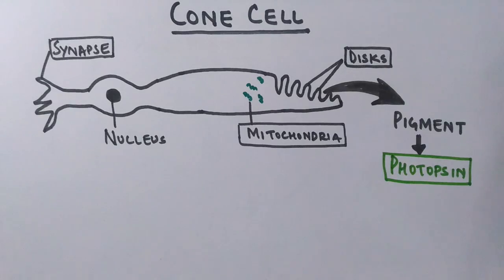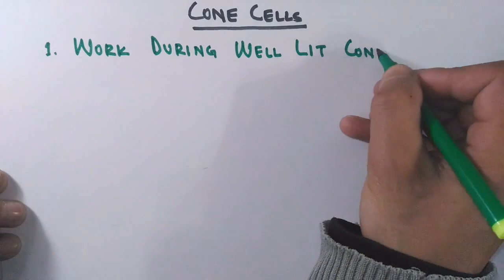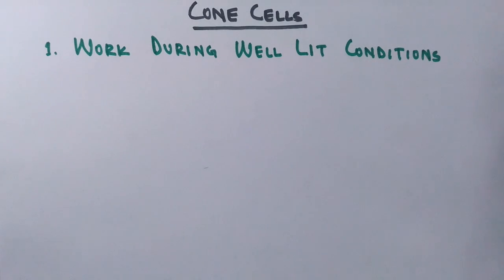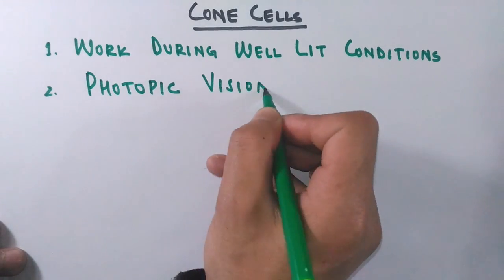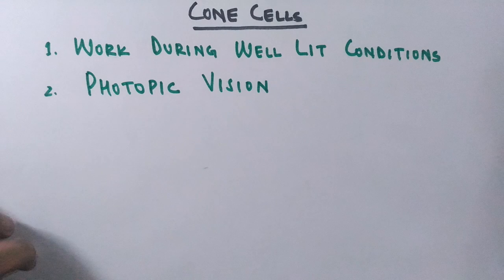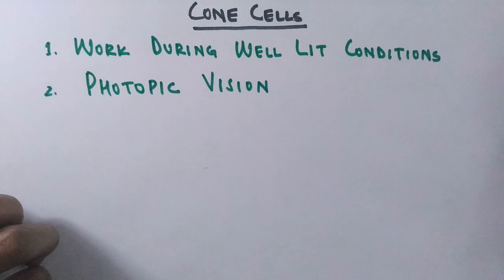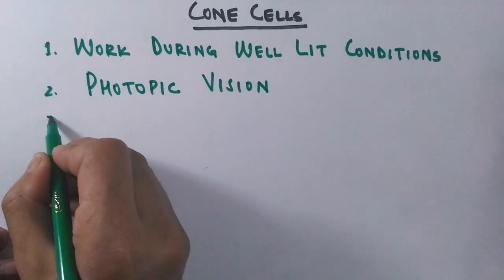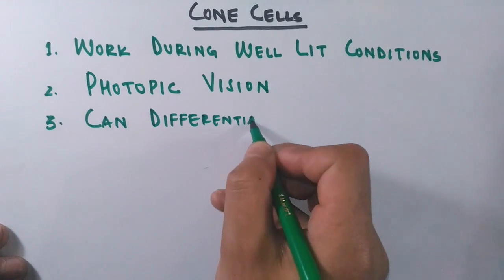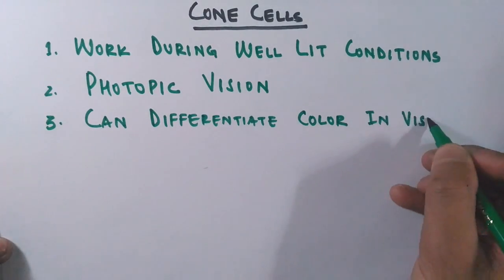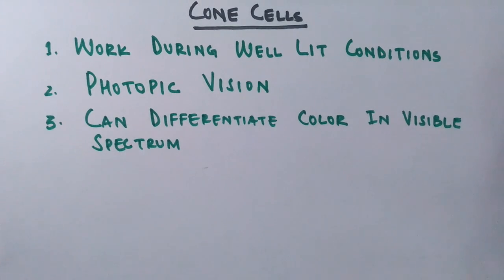Now let's see the function of cones. Unlike rods which work in dim light conditions, these work during well-lit conditions, like in daytime or in bright artificial lights like LED lights. Being able to work in well-lit conditions, we call it photopic vision. Rod cells give us scotopic vision, that is night vision, and these cone cells give us photopic vision. In photopic vision, these cells are able to differentiate color in the visible spectrum.